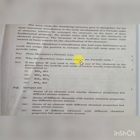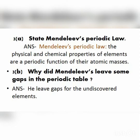The answer to Question 3A — Mendeleev's periodic law: The physical and chemical properties of elements are a periodic function of their atomic masses. For Question 3B, Mendeleev left gaps for undiscovered elements — those elements which had not yet been discovered at the time.